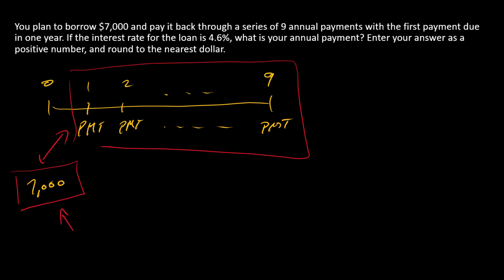So the $7,000 is going to be my PV, and I'm going to enter that as a positive number because I'm going to think of that as an inflow that comes into my pocket that I can use.